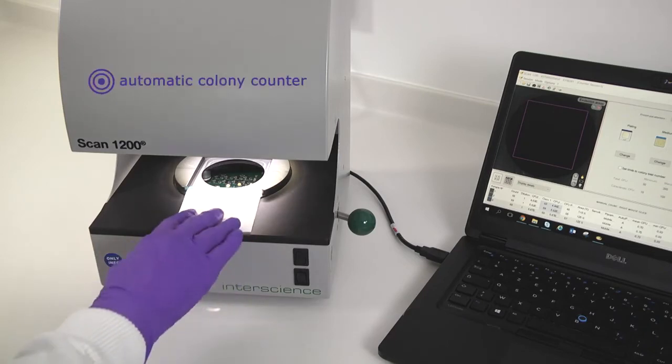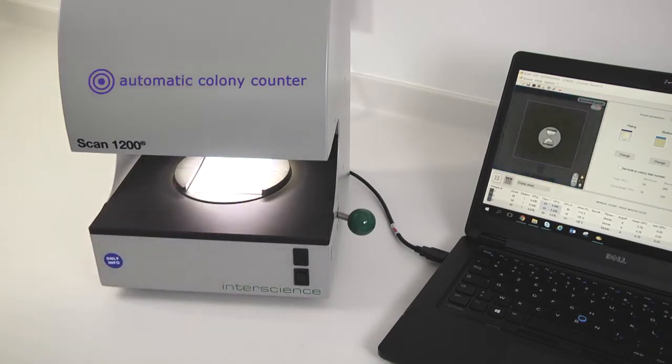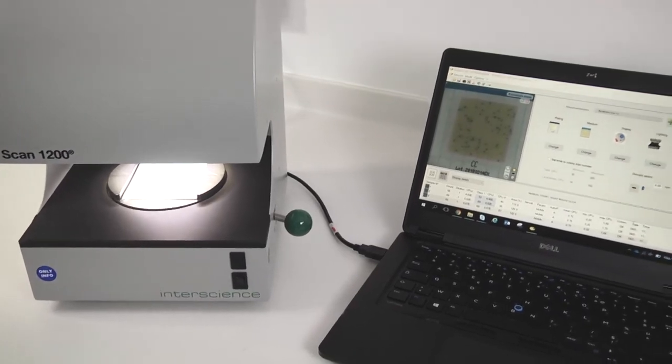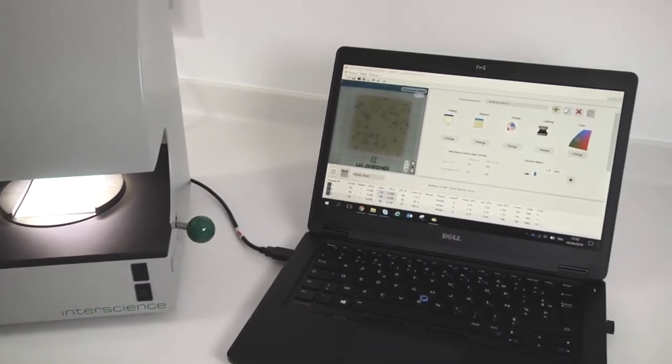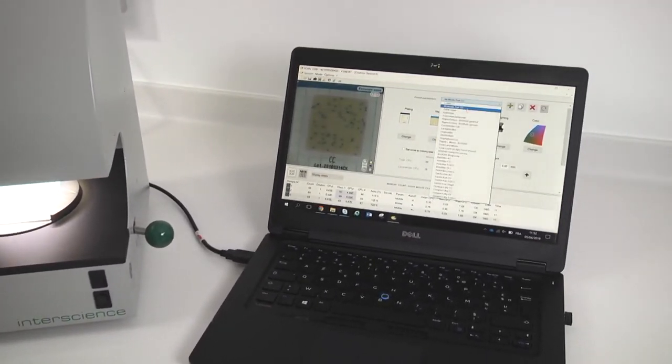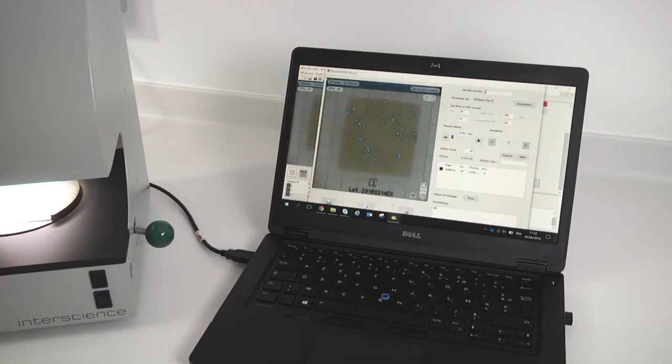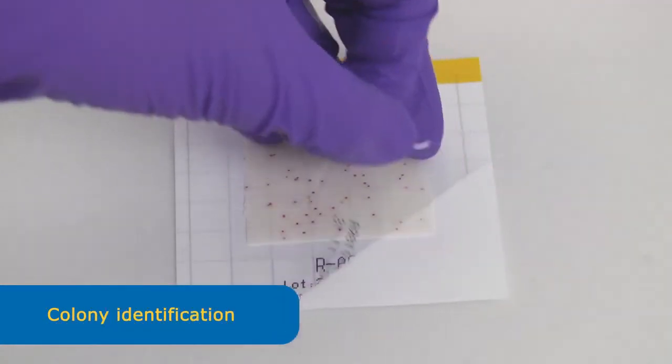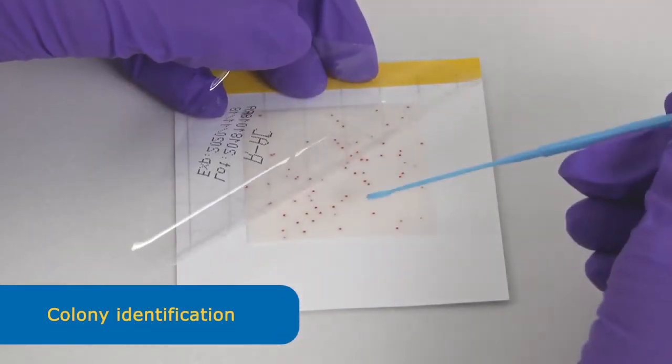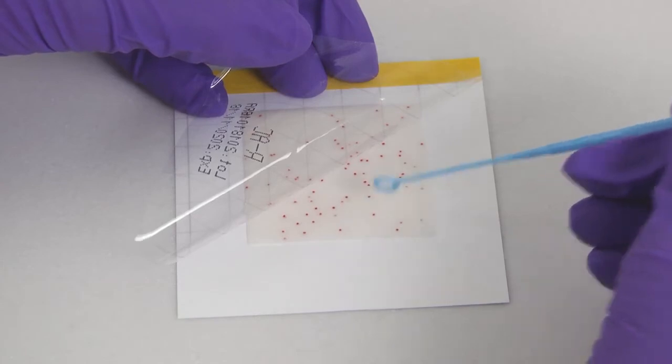The MC MediaPad is also compatible with automatic colony counters. Please refer to the colony counter manual for the specific procedure. For identification, you can pick up a colony using a sterile needle by scratching the pad. The pad will remain stained.